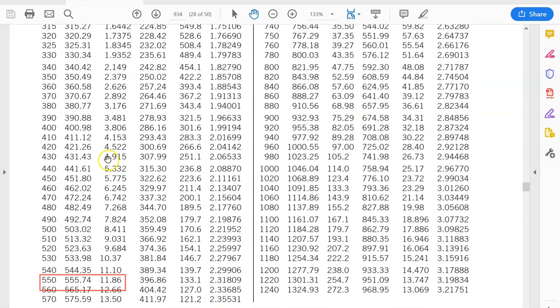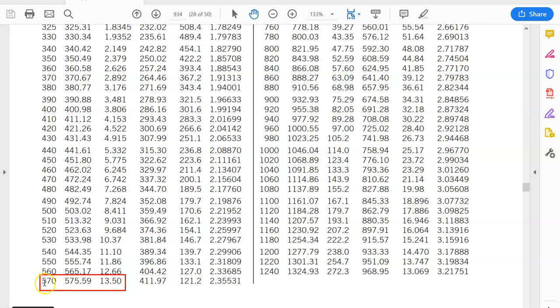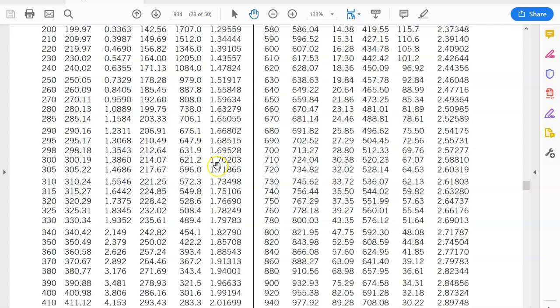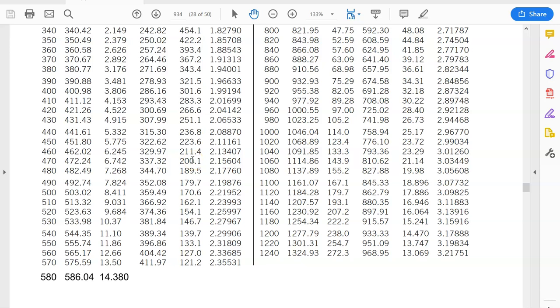and we notice that we have 13.5 at 570K and for 580 we have 14.88. So it's in between these two values because we are looking for 13.86.